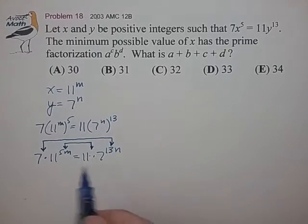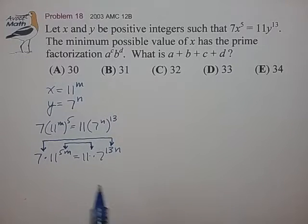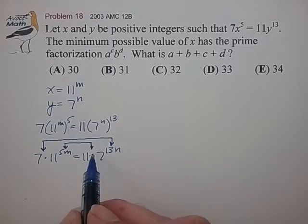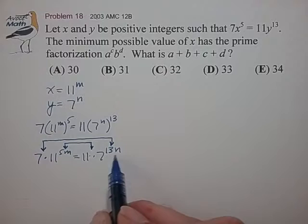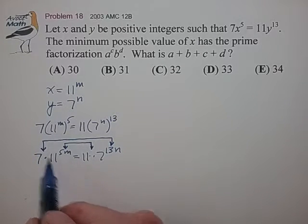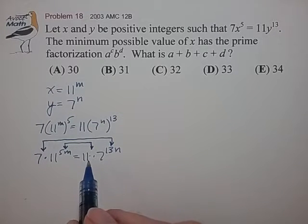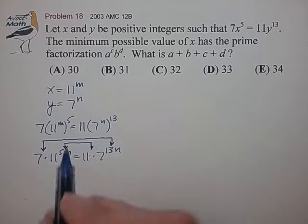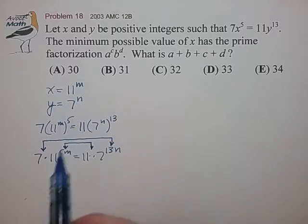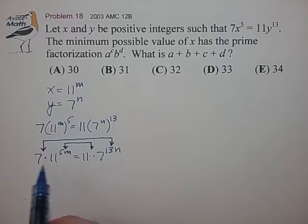And at that point we sort of notice we can't get this to work. There's no way to have 5m equal 1, no way for 13n to equal 1 since m and n are both positive integers. So at that point we get a clue that it looks like x also needs to include some factors of 7 to give us a little more flexibility in this equation.